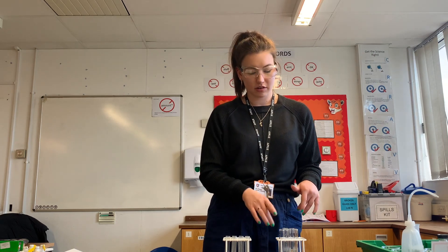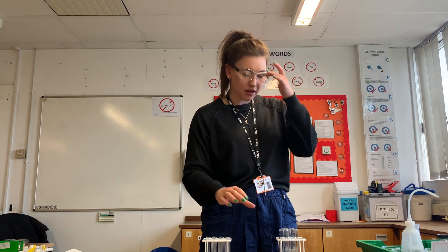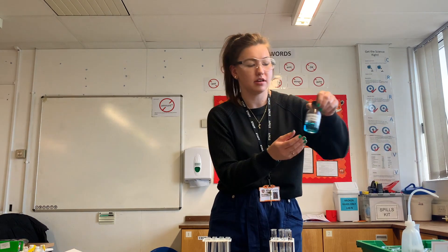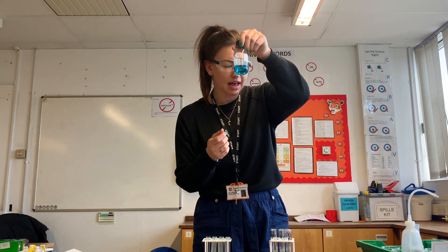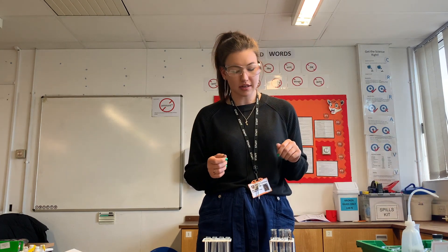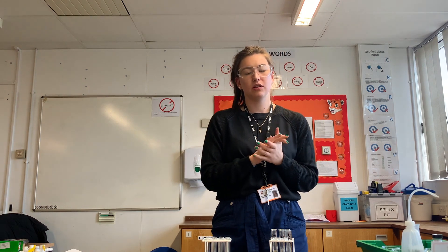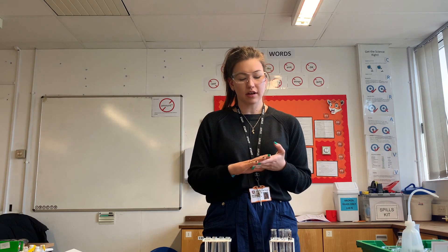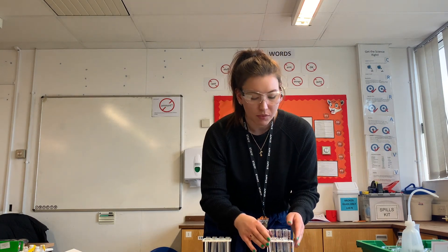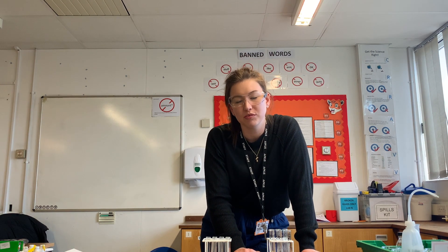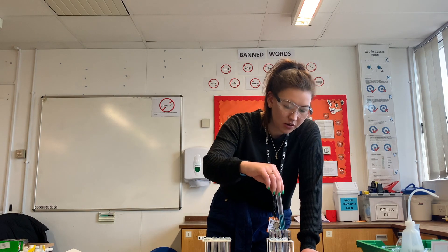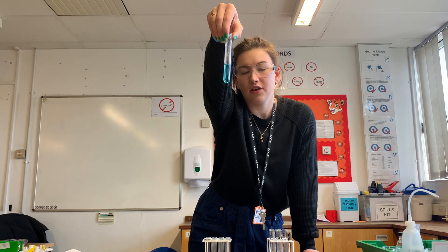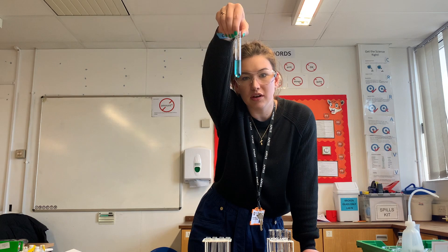Our instructions say to stand these in a rack to cool a little bit. While that's happening, I'll explain what's gone on here. Our Benedict's solution started off a nice blue color because it contains copper Cu²⁺ ions, which are blue. When glucose is present in your sample, those Cu²⁺ ions are reduced to Cu⁺ ions, which form a solid precipitate. The more glucose is present, the more precipitate is formed and the less blue your solution will be, because those blue Cu²⁺ ions have been reduced to Cu⁺. Where we have no glucose, we still have blue Benedict's solution - none of those Cu²⁺ ions have been reduced and no solid precipitate is formed.